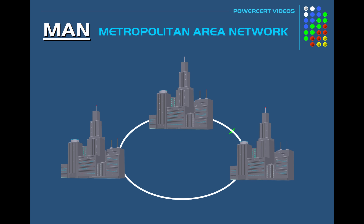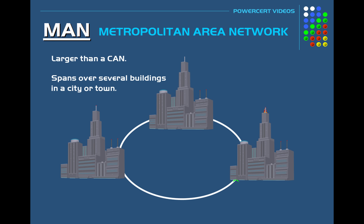The next network type is a MAN. MAN stands for Metropolitan Area Network. This is a larger network than a CAN. It's a network that spans over several buildings in a city or town. MANs are typically connected using a high-speed connection such as fiber optic cable. It's a high-speed network that gives the ability for sharing data and resources within a city.